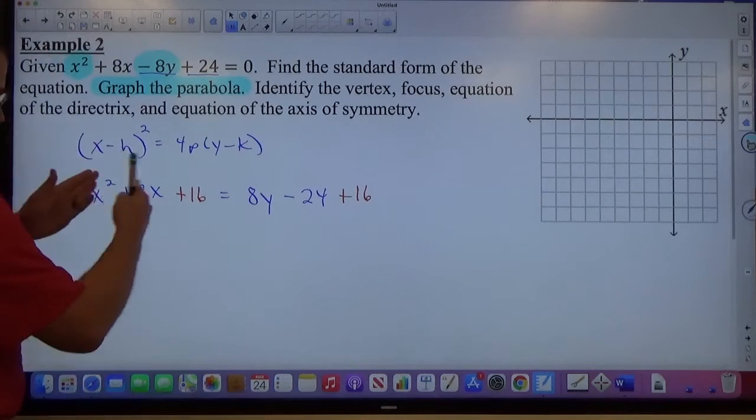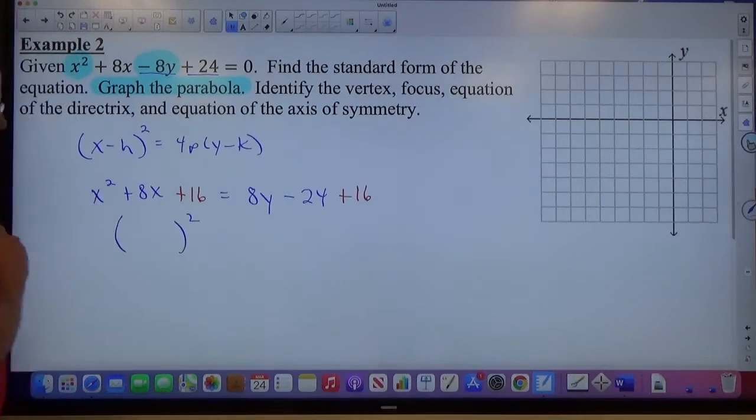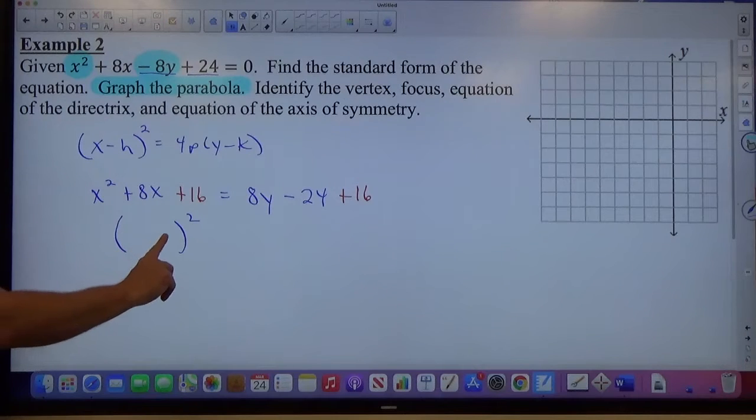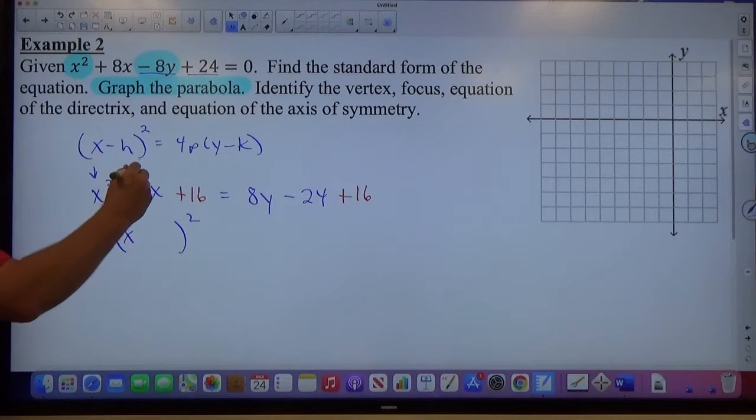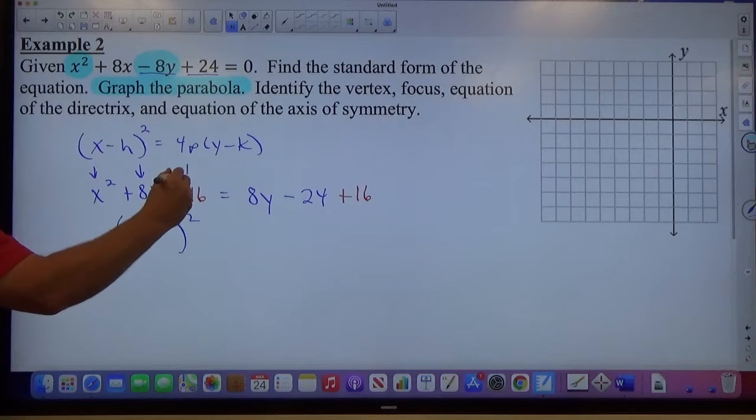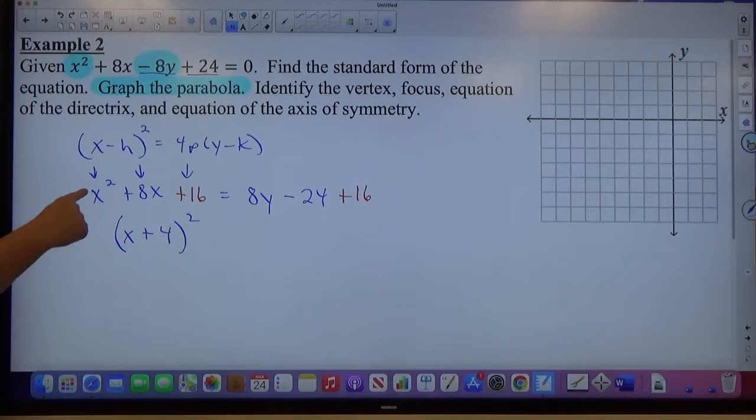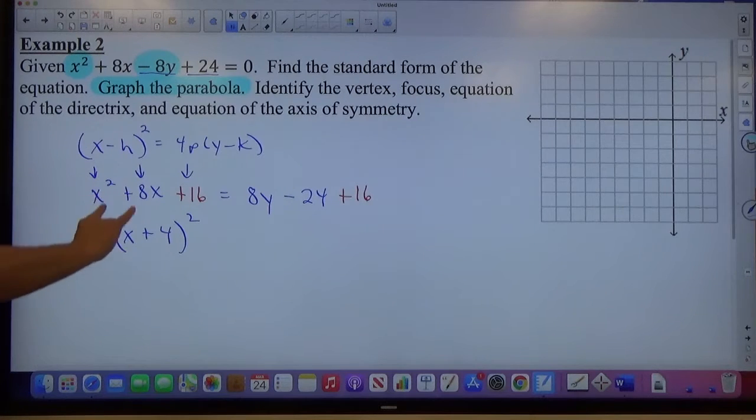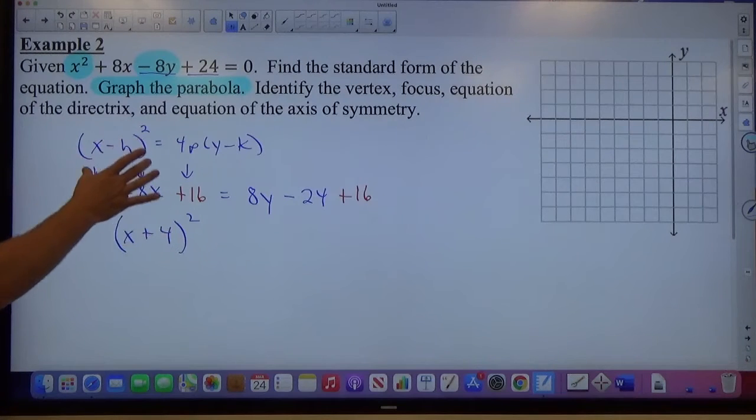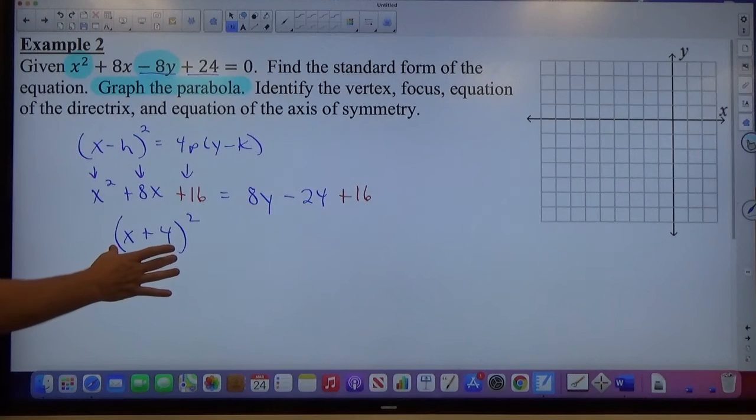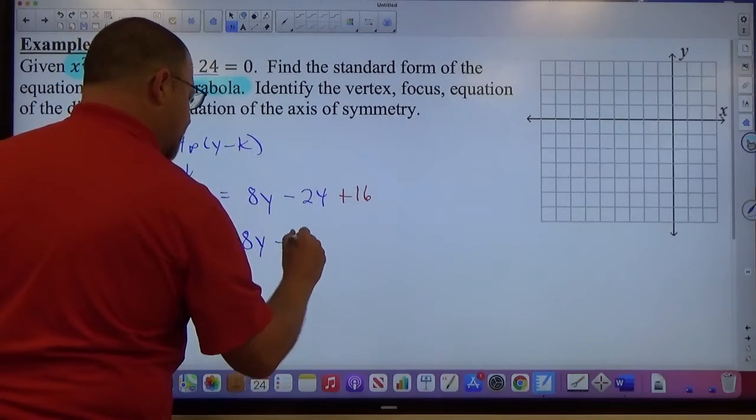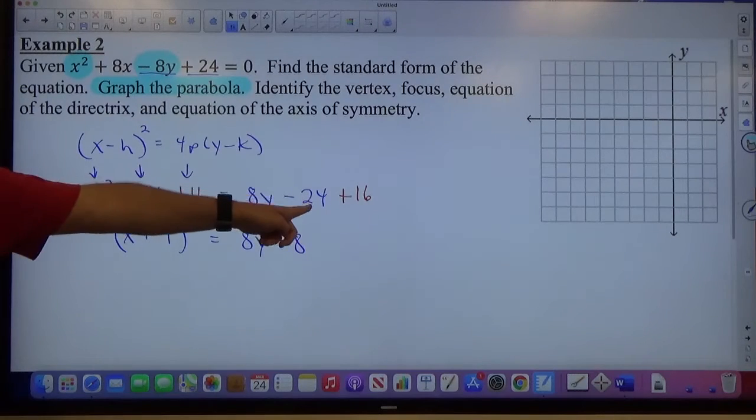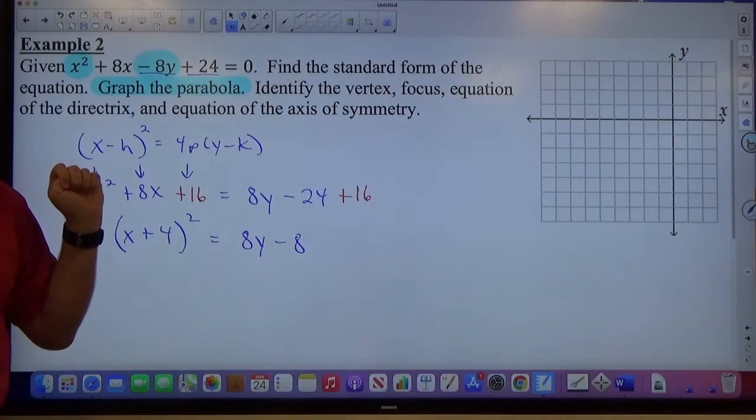Now I want to factor this side, so I want to get my parenthesis squared. Remember, there's three pieces here. We have a letter, and a sign, and a number. The letter comes from the first term, the sign comes from the second term, and the number comes from the square root of the third term. What's the letter, what's the sign, and what's the square root? That's how we factor every time, parenthesis squared. So all of a sudden, we have our left side perfectly done. We have a parenthesis squared for the sake of standard form. On the right-hand side, we have 8y minus 8. I just combined negative 24 and 16, simplified like terms.